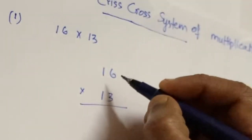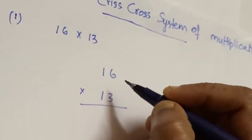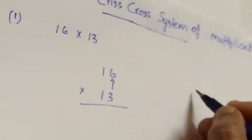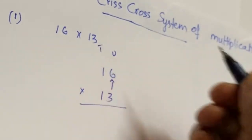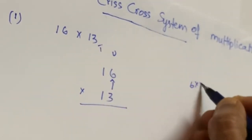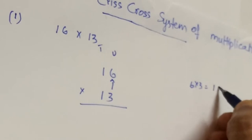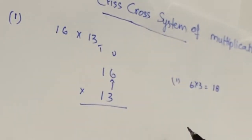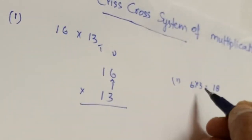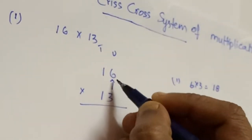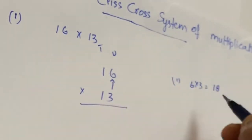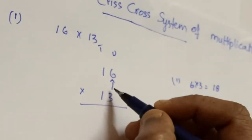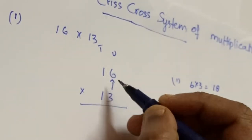In the criss-cross method, the first step is to multiply the units place digits. This is the units place and this is the tens place. So 6 into 3 equals 18. That is the first step: multiply the units place digits — 3 into 6 equals 18.